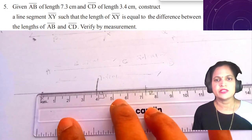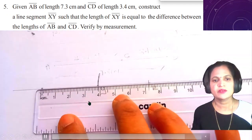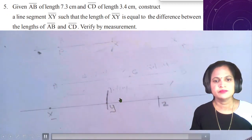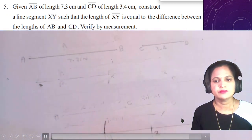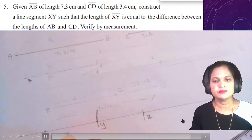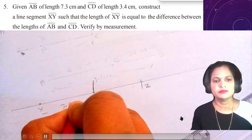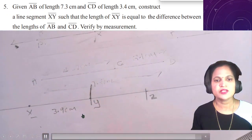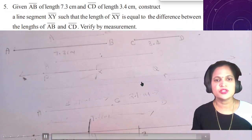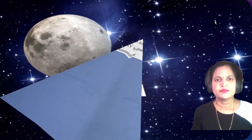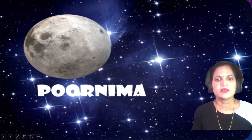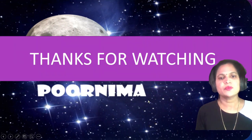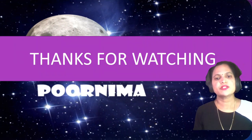The XY line is drawn here. XY line is drawn here — this is how the XY line segment representing the difference is constructed.